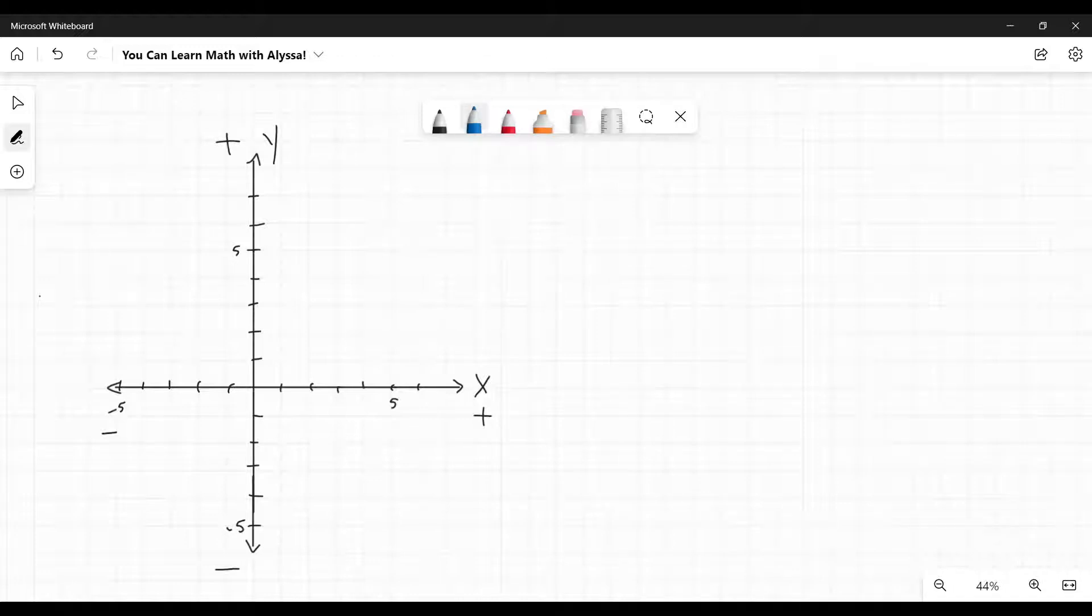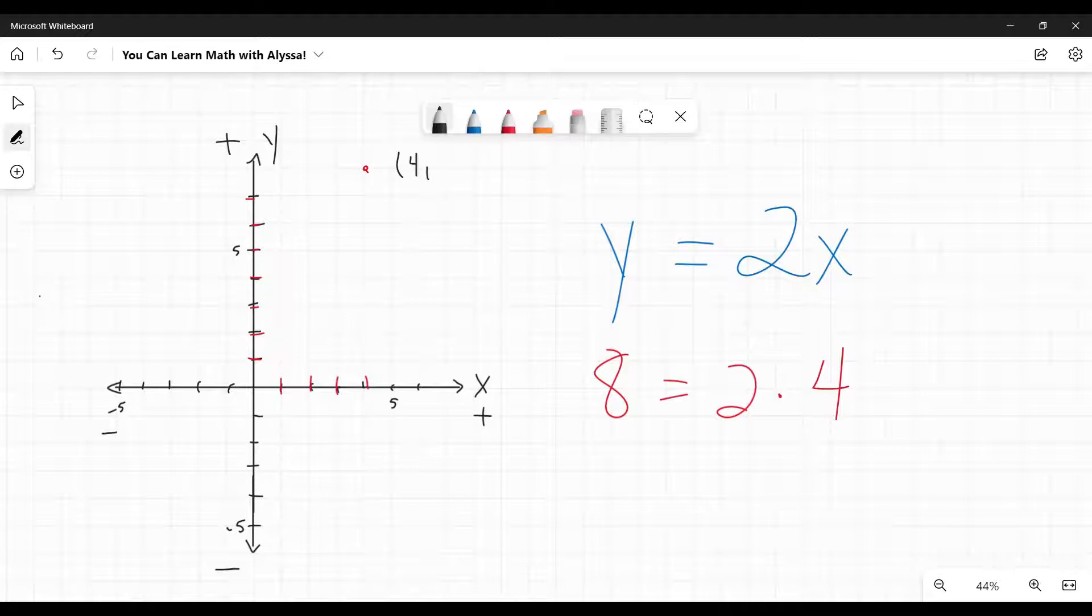So let's think about if I had an equation like y equals 2 times x. And I picked a number for x, and I said I want x to be 4. What would y be? Well, 2 times 4 equals 8. So if x is 4, then y is 8. So I could go over here and go, okay, when x is 4, 1, 2, 3, 4, then y is 8. 1, 2, 3, 4, 5, 6, 7, 8. Just barely. So there's the point where x is 4 and y is 8.